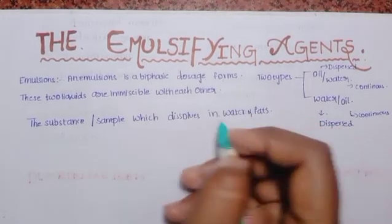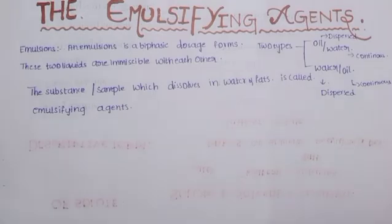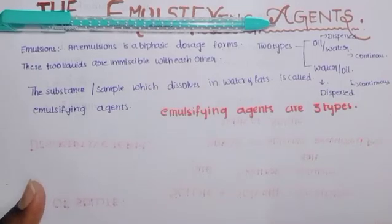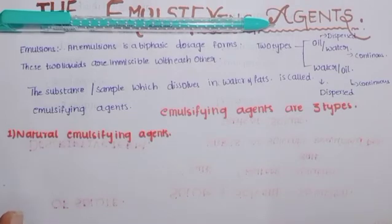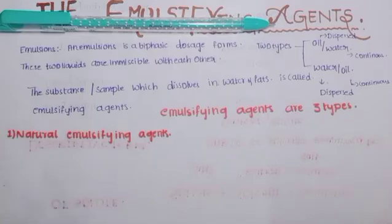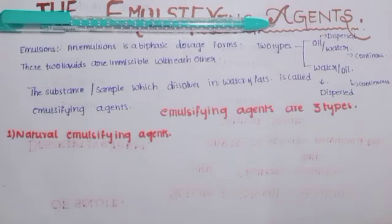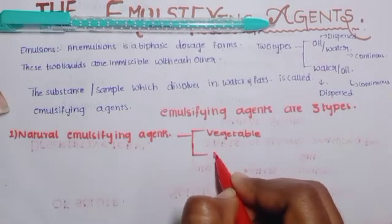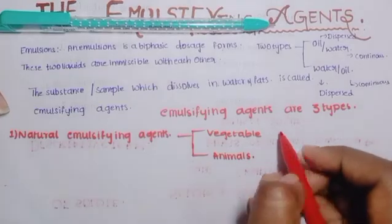Emulsifying agents are of three types. First, we have natural emulsifying agents. Natural emulsifying agents are agents which come from nature — meaning there are no chemicals involved. Natural emulsifying agents are further divided into two types: vegetable source and animal source.